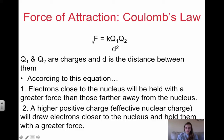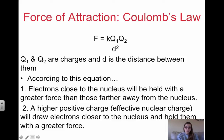Force equals K, which is a constant, times Q1, which is one of the charges, times Q2, which is another charge, over distance squared. K is a constant you'll always be given. Q1 and Q2 are charges, and D squared is the distance between them. According to this equation, electrons that are close to the nucleus will be held with a greater force because the value of D is small. When D is small, force is large — force and distance are inversely proportional to the square of the distance.